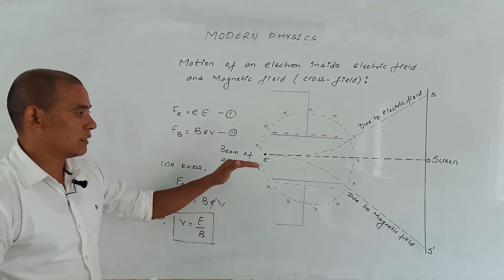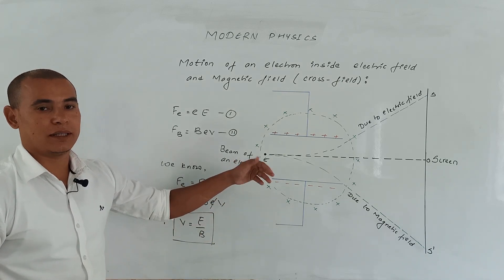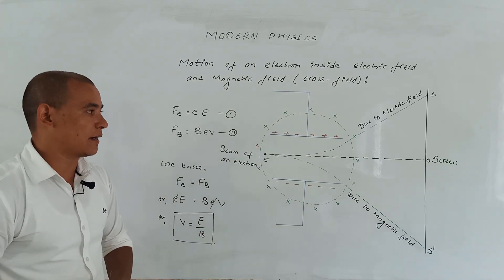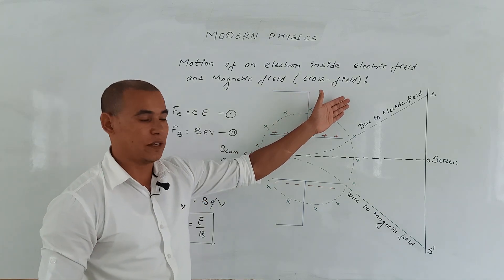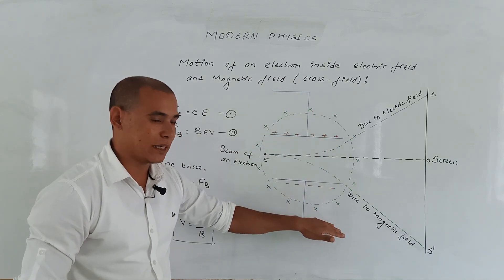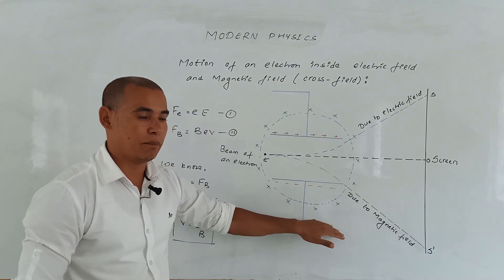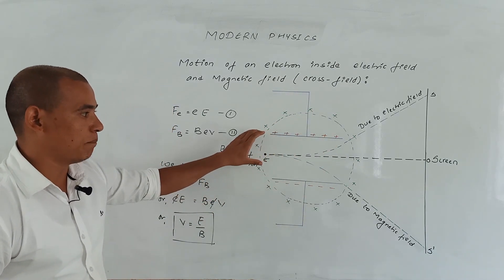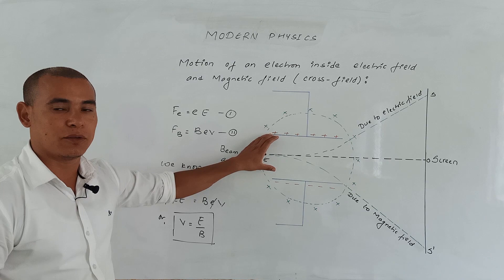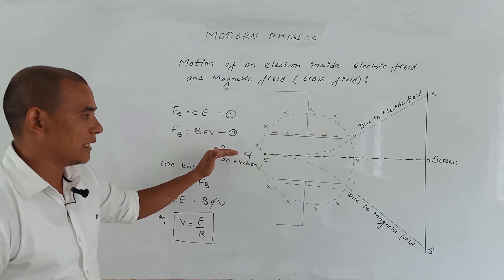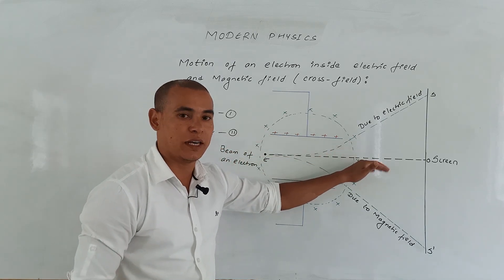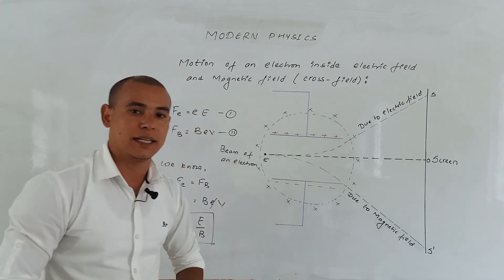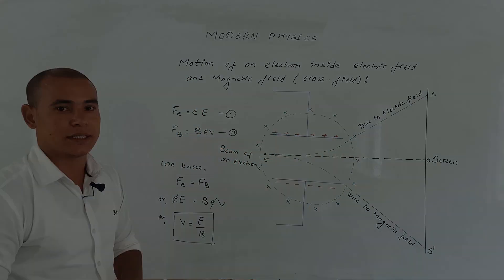This experiment explains that the electron is affected by both the electric field and the magnetic field, but when they are placed perpendicularly, the electron moves through those fields without getting deviated.